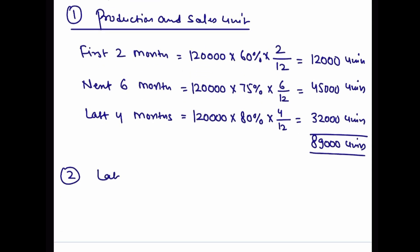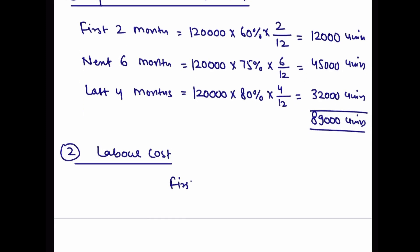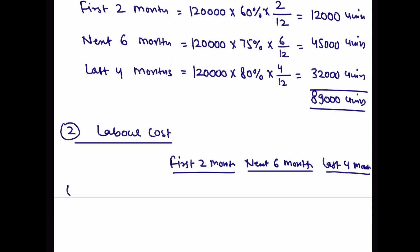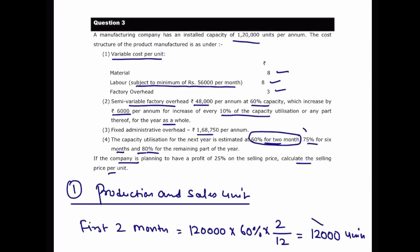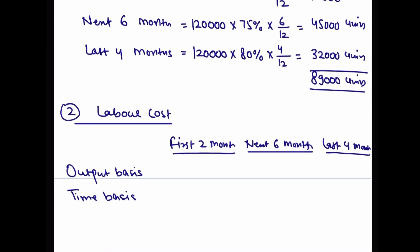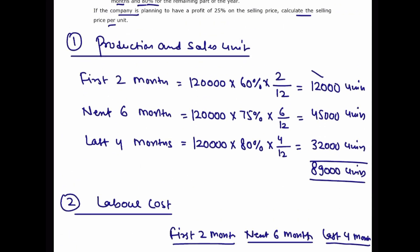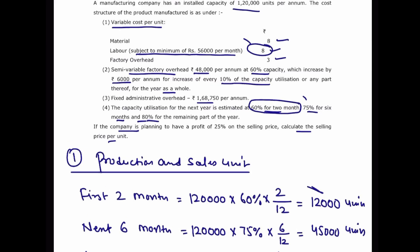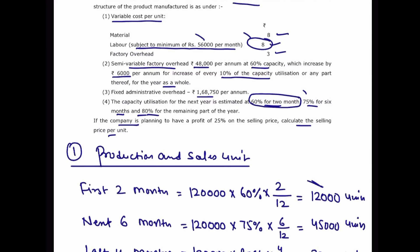When we prepare the cost sheet, there will be a difficulty in labor cost. For first two months, next six months, and last four months, labor calculation has to be done on both output basis and time basis — whichever is higher, we will pay that. For the first two months, we are producing 12,000 units. Output basis: 12,000 multiply by 8 rupees per unit = 96,000.